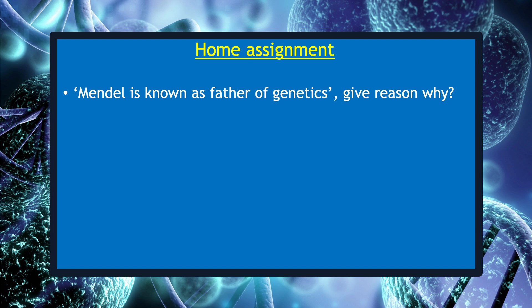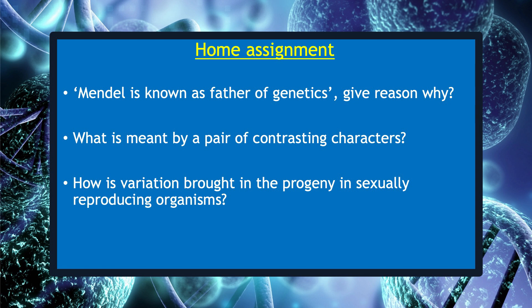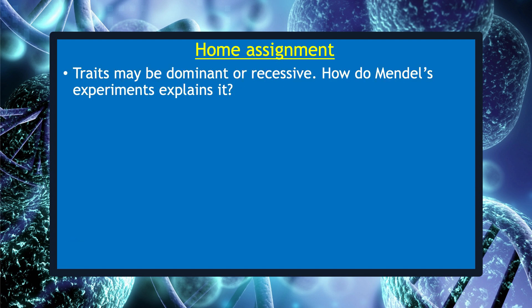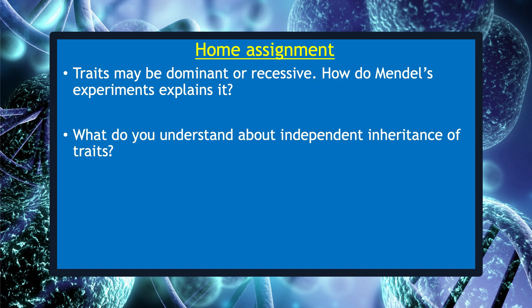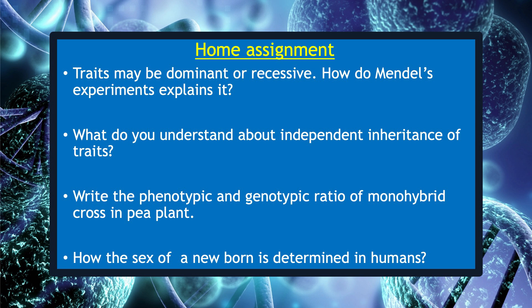It is time to note down your assignments related to today's session. First, Mendel is known as the father of genetics — give reason. What is meant by a pair of contrasting characters? How is variation brought in the progeny in sexually reproducing organisms? How are traits expressed? Traits may be dominant or recessive — how do Mendel's experiments explain it? What do you understand about independent inheritance of traits? Write the phenotypic and genotypic ratio of monohybrid cross in pea plants. How is the sex of a newborn determined in humans?